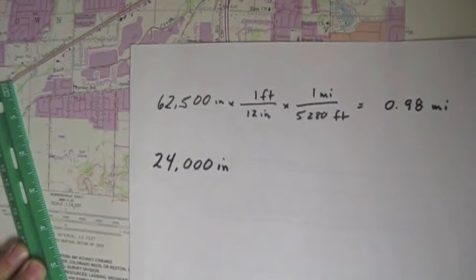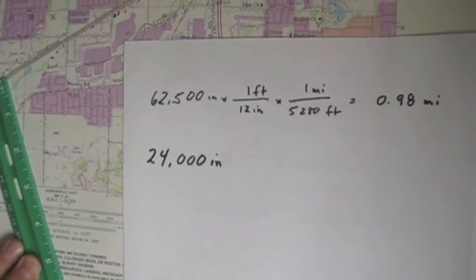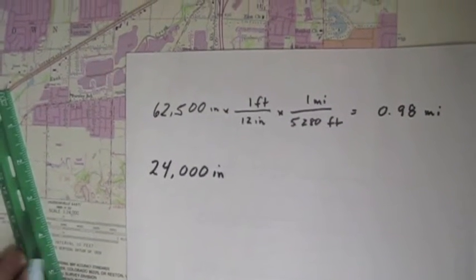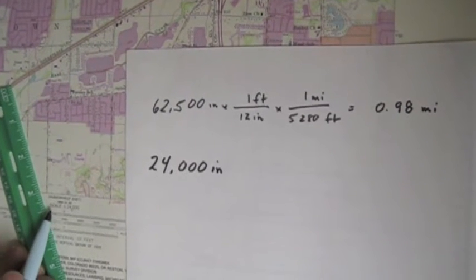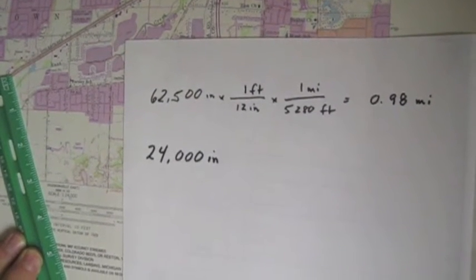Questions 7 and 8 are about scale again. Now we're on the Granville Quadrangle, and the scale is a little different. If you see down at the bottom, it's got a number 1 to 24,000.